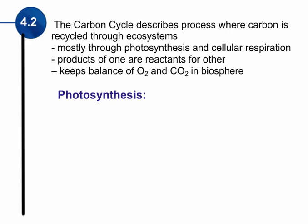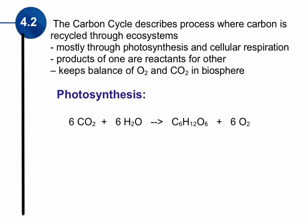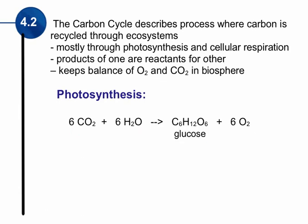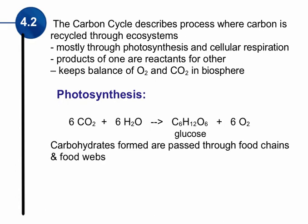Let's look at photosynthesis, which is really just a chemical reaction. It's carbon dioxide (CO2) combining with H2O, and through photosynthesis we get C6H12O6 and oxygen (O2). That C6H12O6 is glucose, a sugar. Most plants take carbon dioxide and water and combine them to form oxygen, which is given off, and a form of glucose that they store. This allows the carbohydrates formed in the plants to be passed through the food chain and food webs.